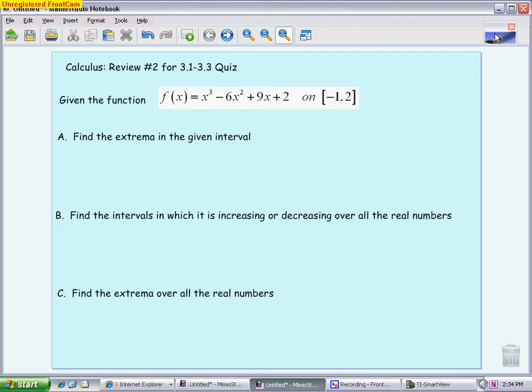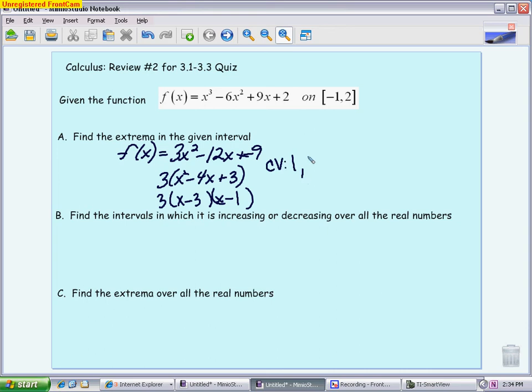The first question wants to find the extrema in the interval. This goes back to what we did in the beginning of the chapter on closed intervals. First, I need to find any critical values that exist in the interval. The derivative is 3x² - 12x + 9. Pulling out a 3 gives x² - 4x + 3, which factors to give critical values of 1 and 3.